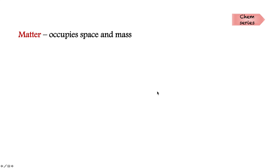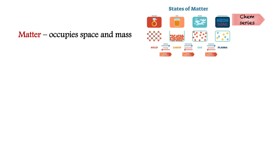So what is matter? Matter occupies space and has mass. There are four different types of matter: solid, liquid, gas, and plasma.